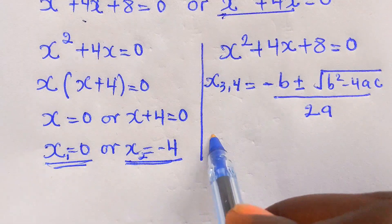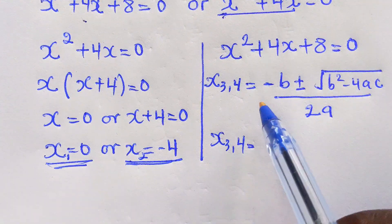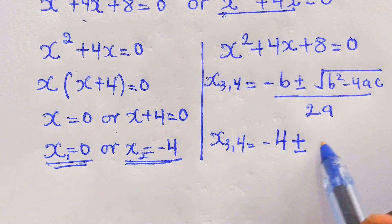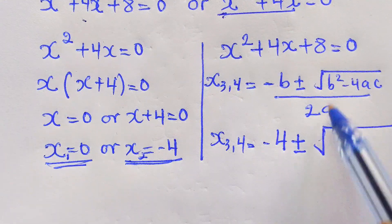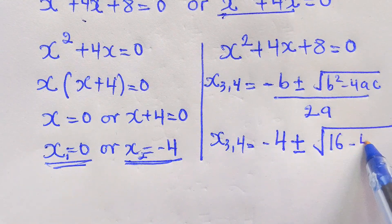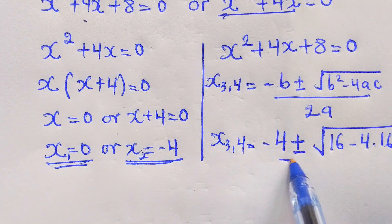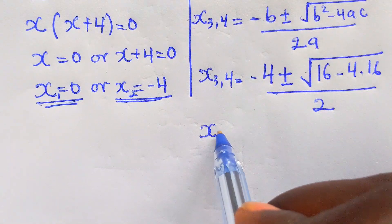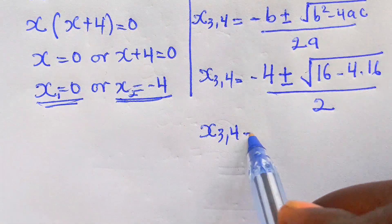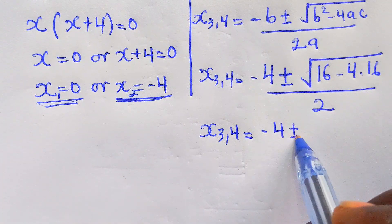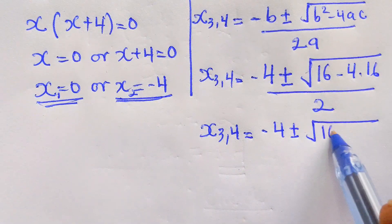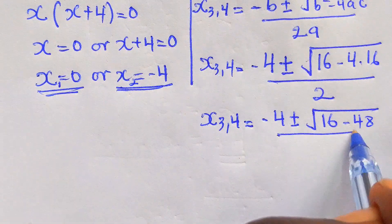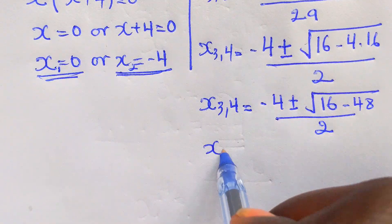So x3 and x4 will be: negative b — which is negative 4 — plus or minus square root of b squared, which is 16, minus 4 times 1 times 8, all over 2. That gives us x3 and x4 equal to negative 4 plus or minus square root of 16 minus 48, over 2.